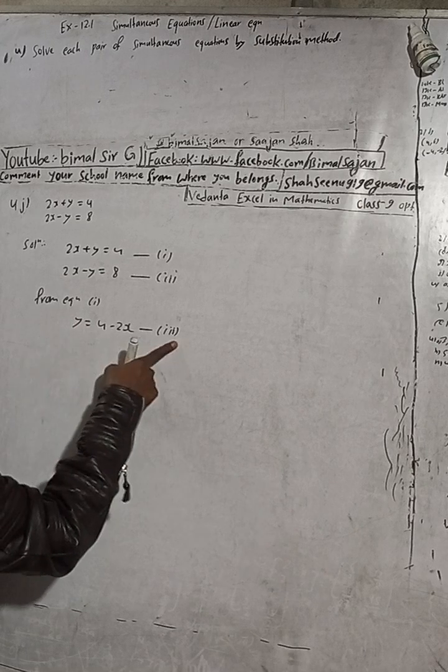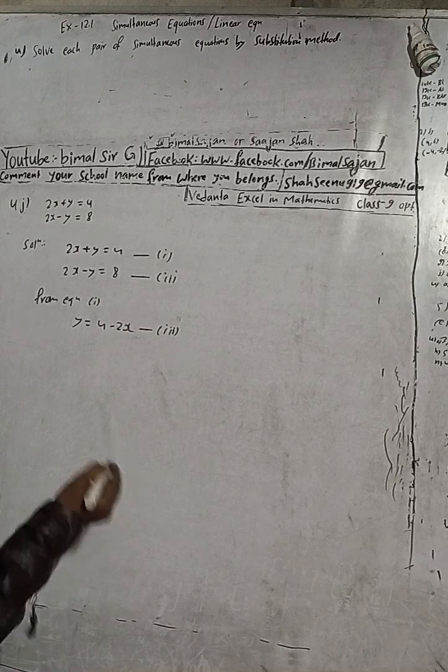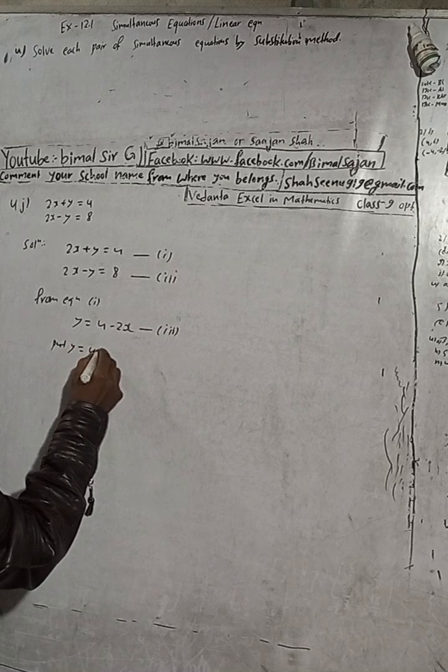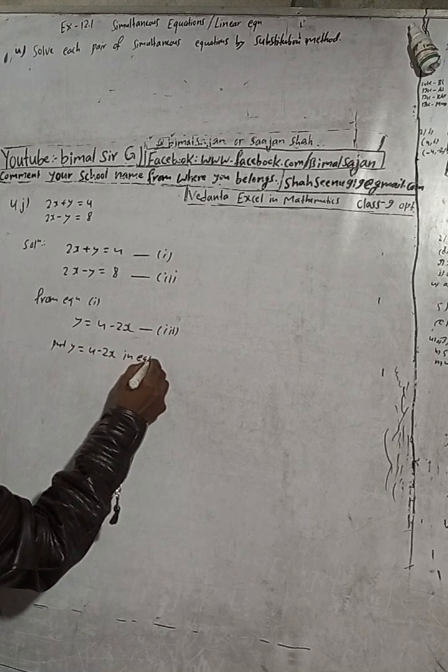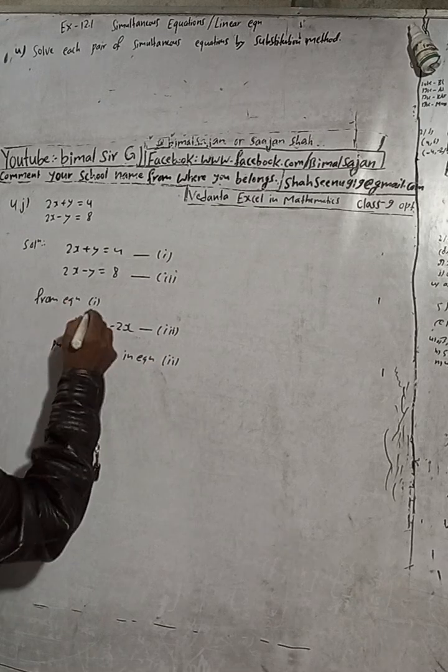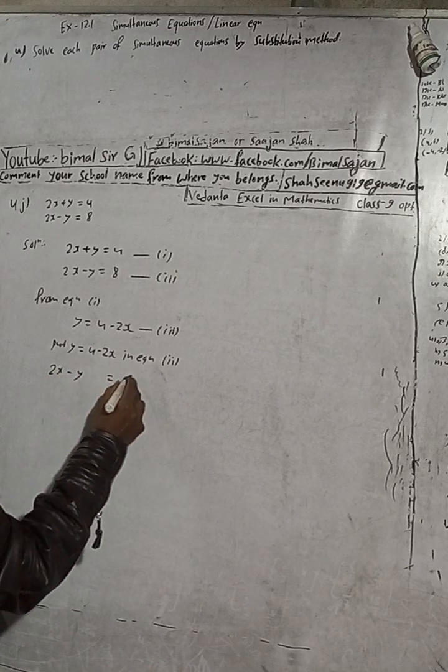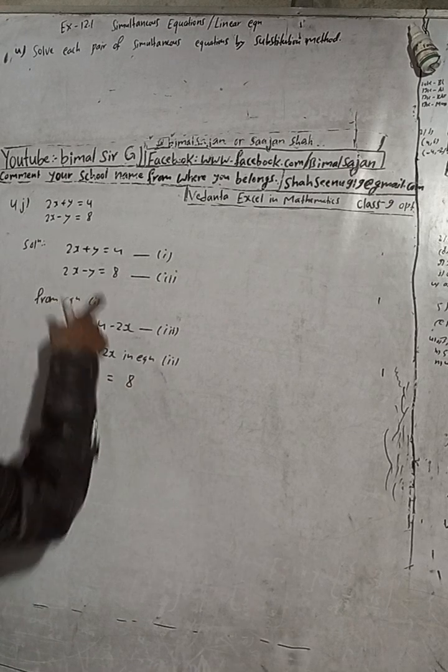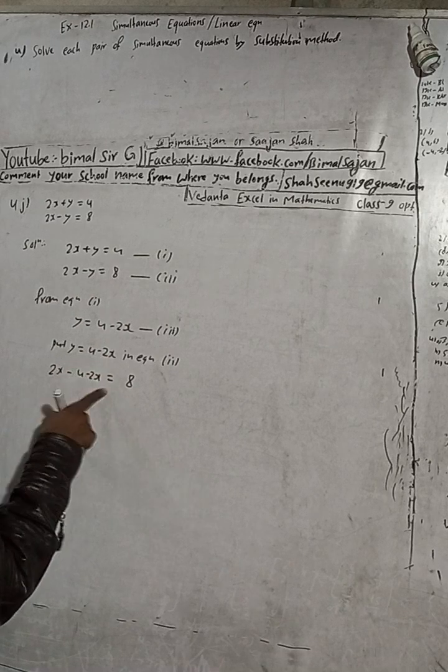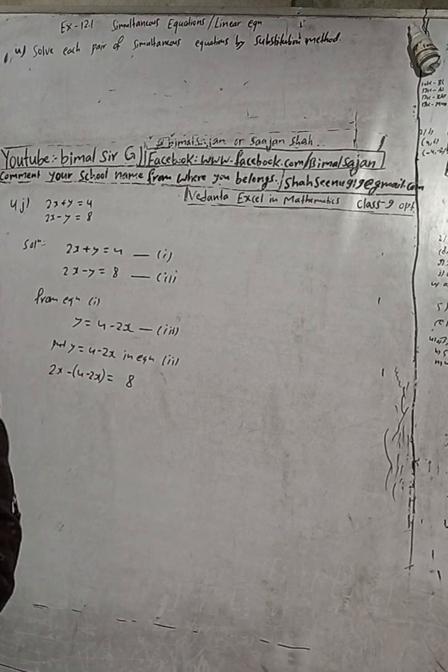Now substitute the value of y from equation 3 into equation 2. Put y = 4 - 2x in equation 2. So 2x - y = 8. In place of y, put the value 4 - 2x. This bracket is very important and necessary. If you don't put the bracket, your answer will be wrong.